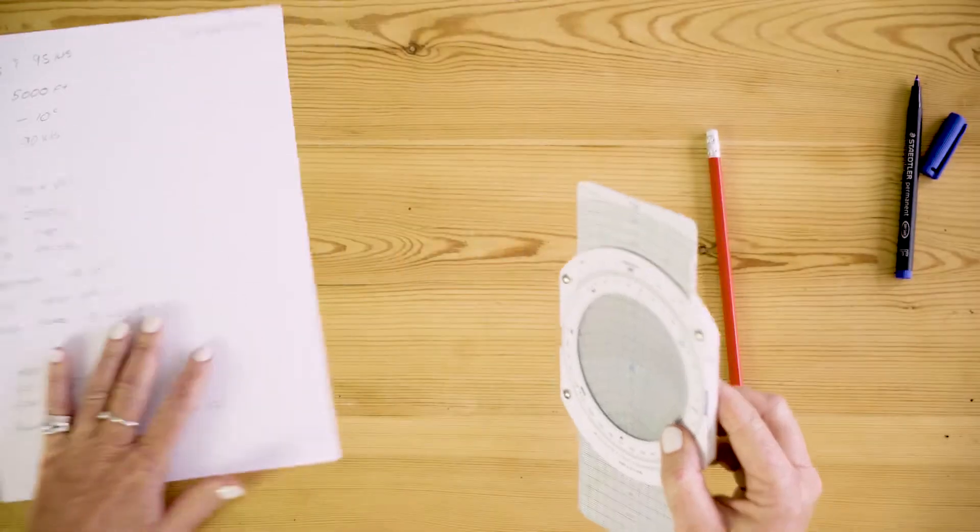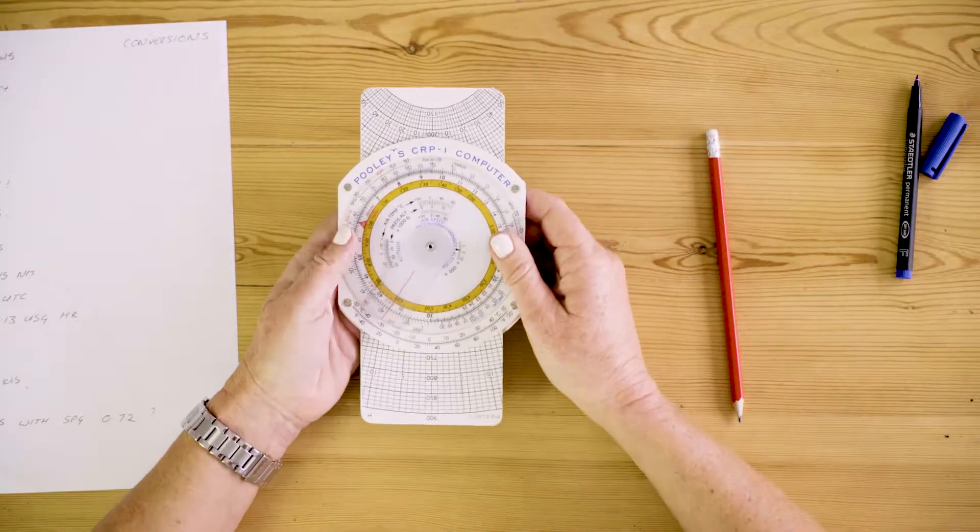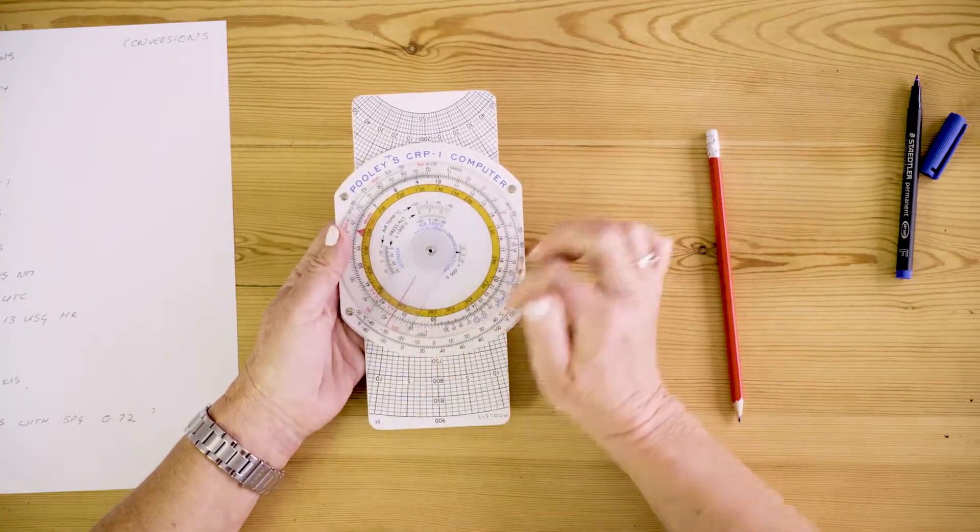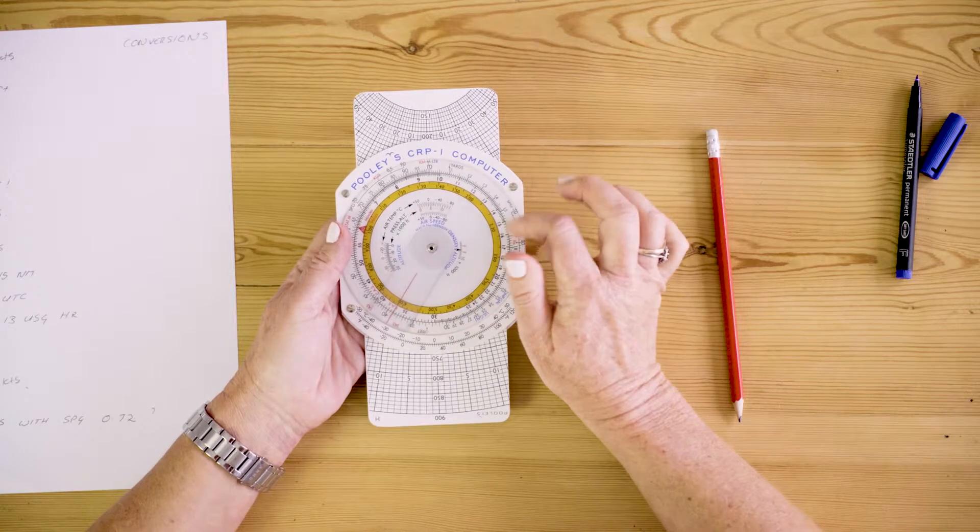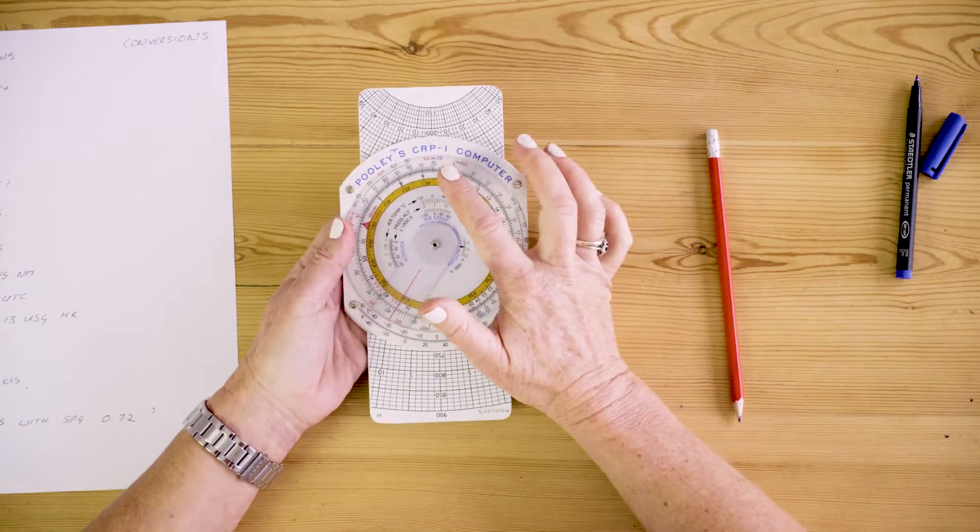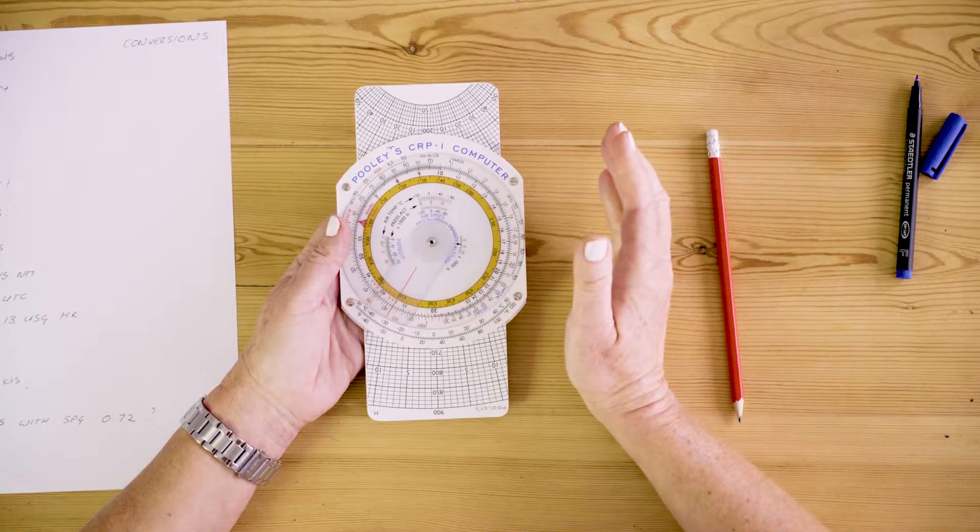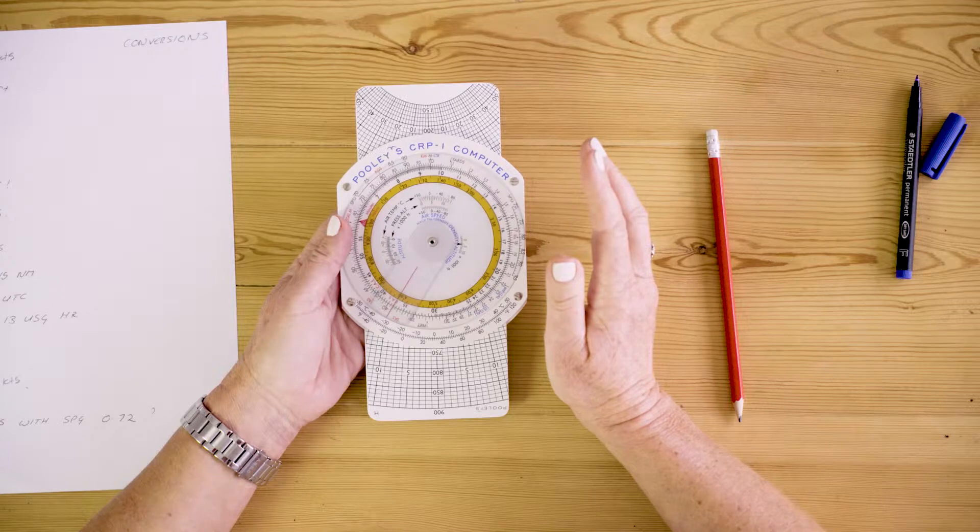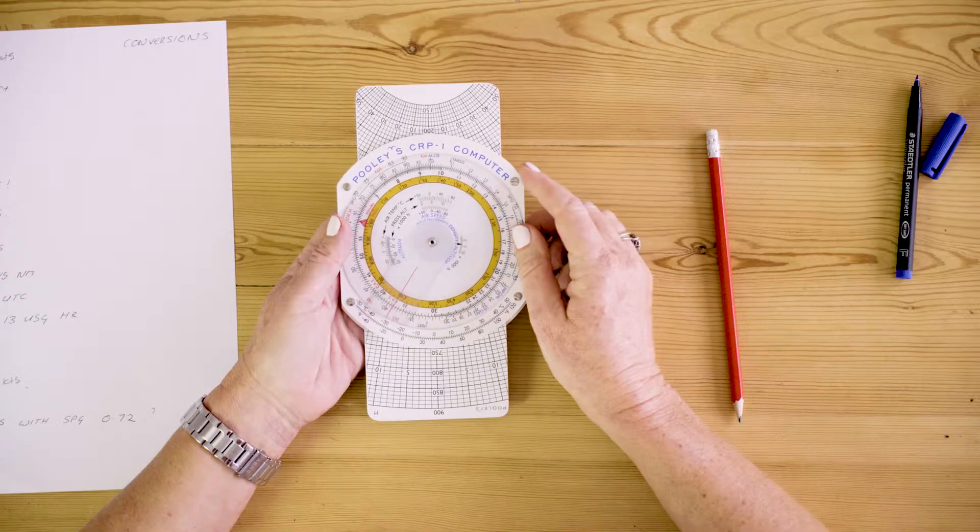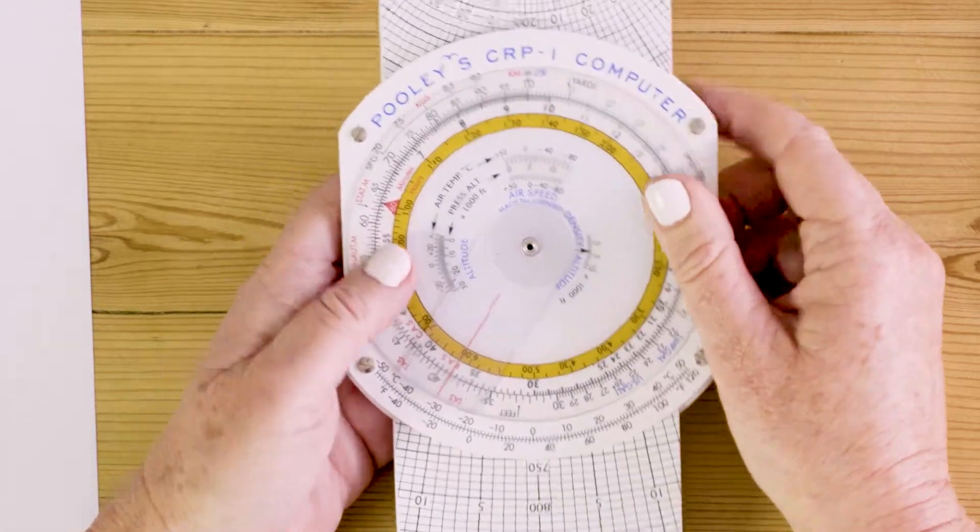I turn the computer over. I gave you a brief instruction of the writing around the outside. The only time we ever use this writing around the outside is if we are converting from one unit to another. So I'm not using the writing because all I want to know if I'm doing 87 knots is how long it's going to take me to do 115 nautical miles.